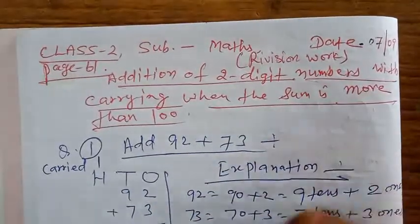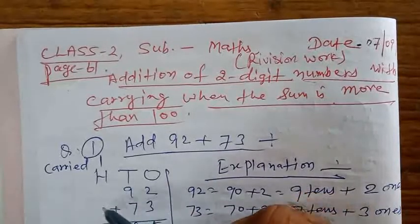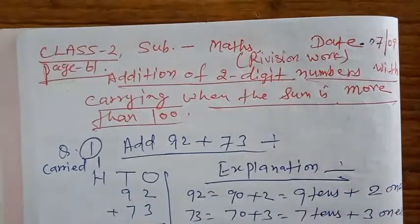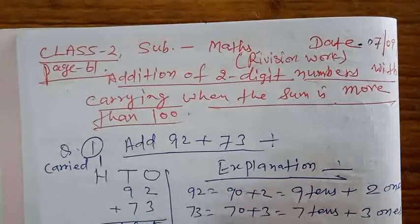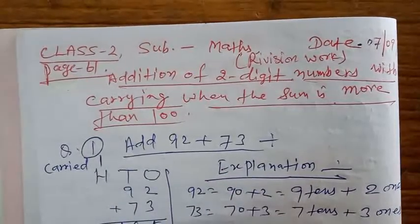Here, add the hundreds, 100. Here, 0 plus 0, and carry 1. If we take 1, then we have 1. The result is 165.